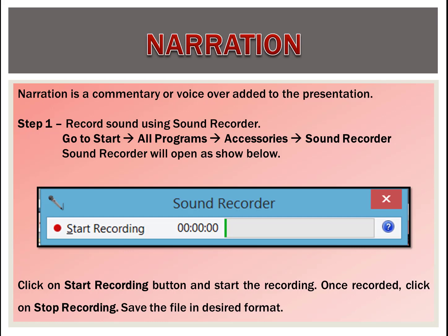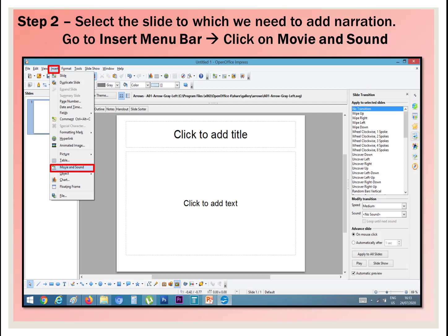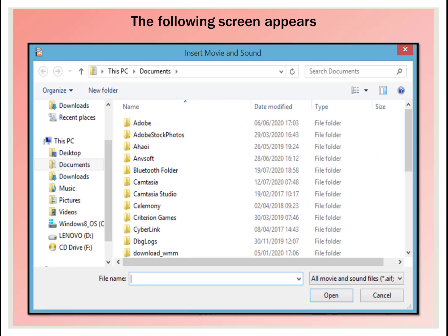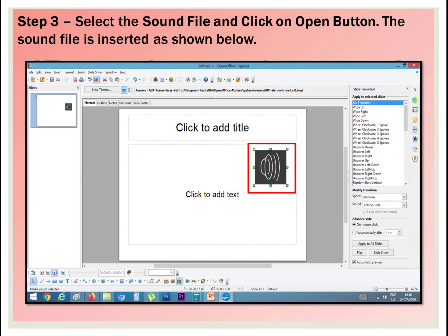Sound Recorder will open as shown. You can also search for Sound Recorder using the search bar on your computer. Click on the Start Recording button and begin recording. Once recorded, click on Stop Recording. Save the file in the desired format. Select the slide to which you need to add narration. Go to the Insert menu bar and click on the Movie and Sound option. The following screen appears. Select the sound file and click the Open button. The sound file is inserted as shown.